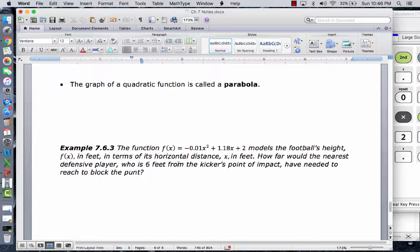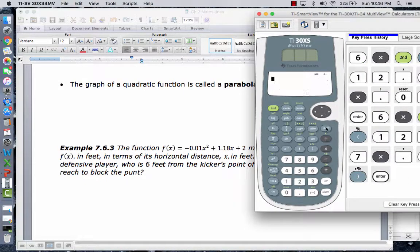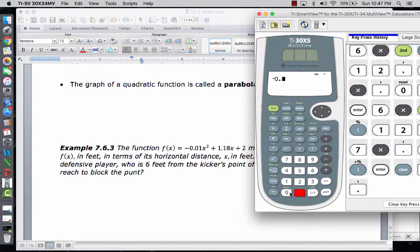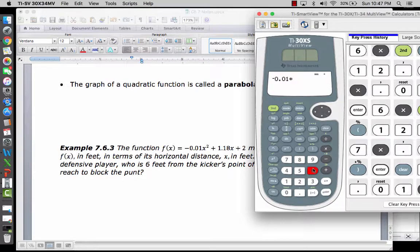So we're just going to plug that in. I'm going to clear out the calculator here. We're going to do a negative 0.01 times 6 feet. So 6 is our x. We're going to square that.